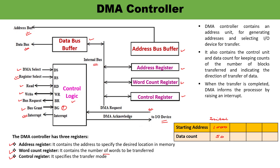The first location denotes the first data. When that data is transferred, the next memory location — 1001 — is pointed. The remaining number of words to be transferred becomes 49. After 1001, when that data is transferred, the next location pointed is 1002, and the remaining count becomes 48. This process continues with internal checking until the data count reaches zero. When the count reaches zero, the entire operation is complete and the transfer is done. DMA then informs the processor by raising an interrupt, signaling the end of the operation.